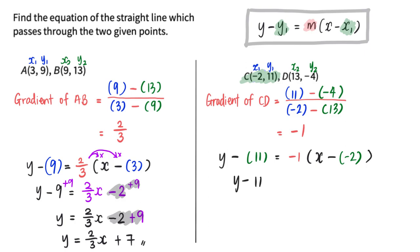When I substitute, because there is x minus negative 2, I will simplify the inside first. So this will be negative 1 times (x plus 2).